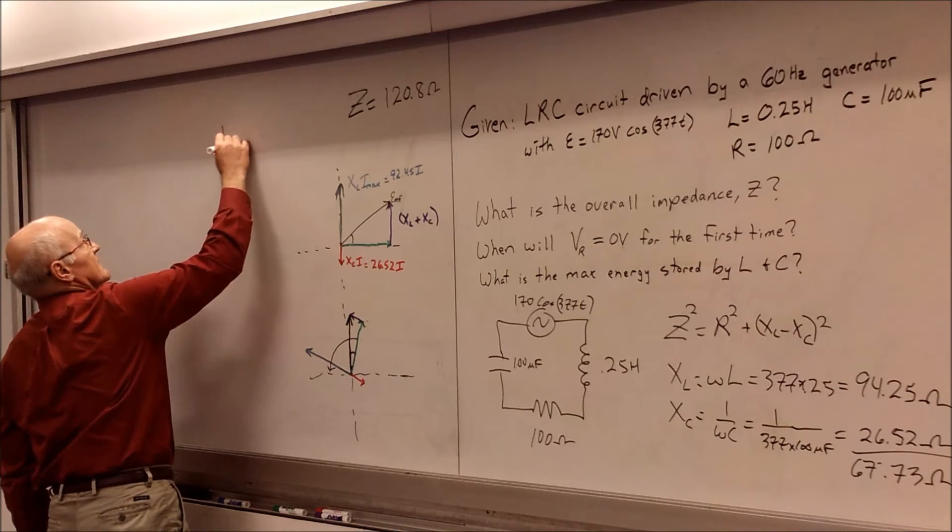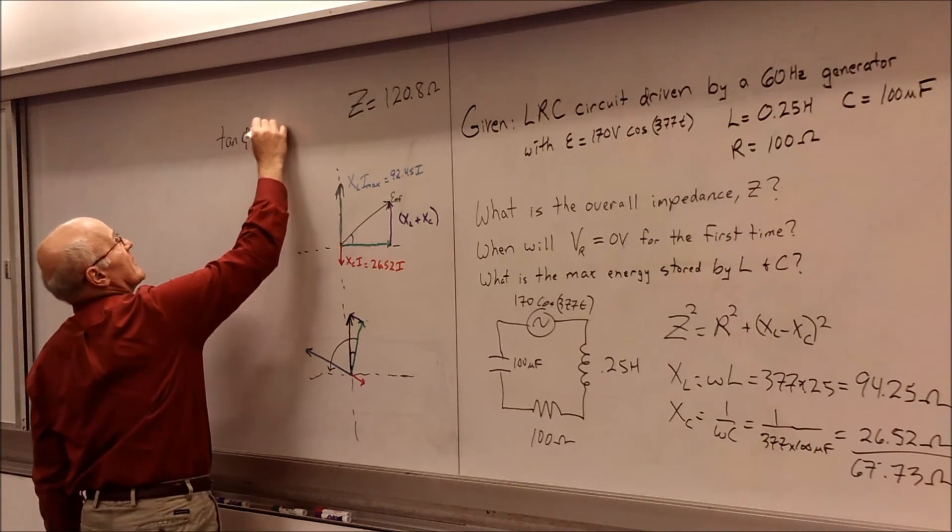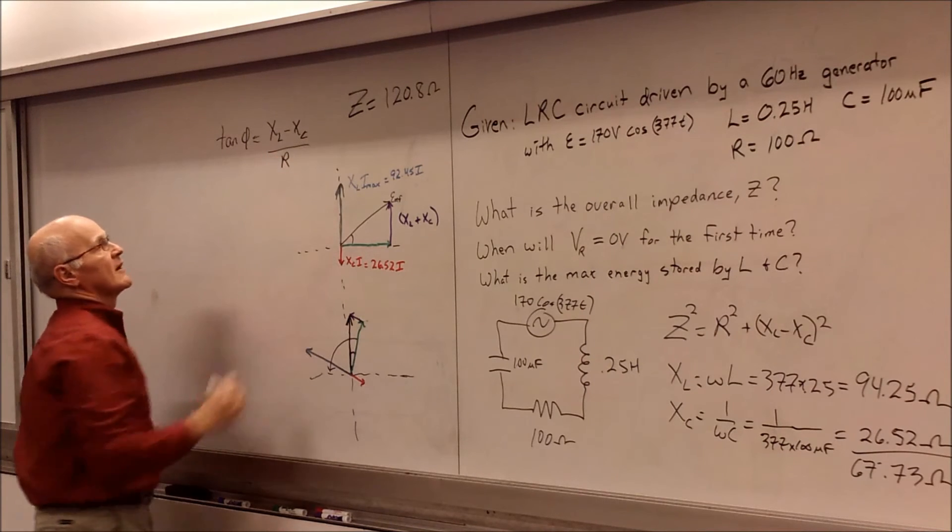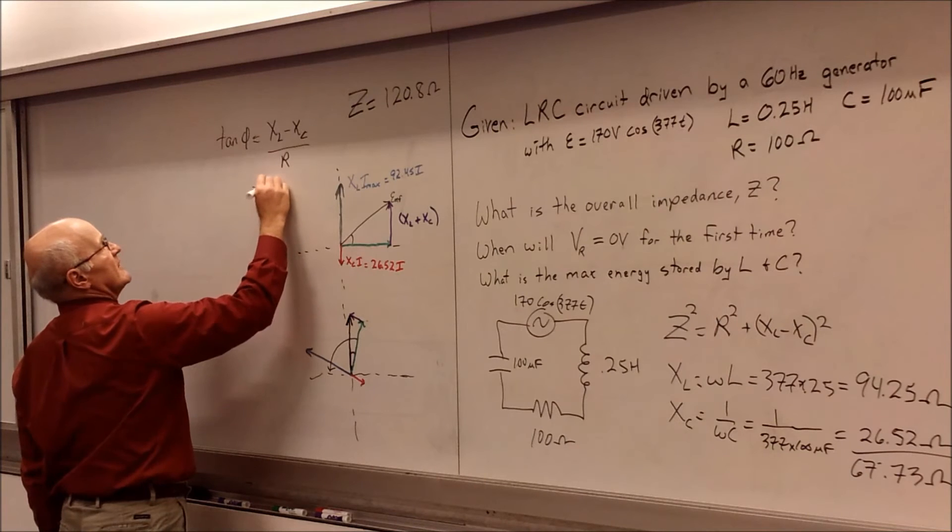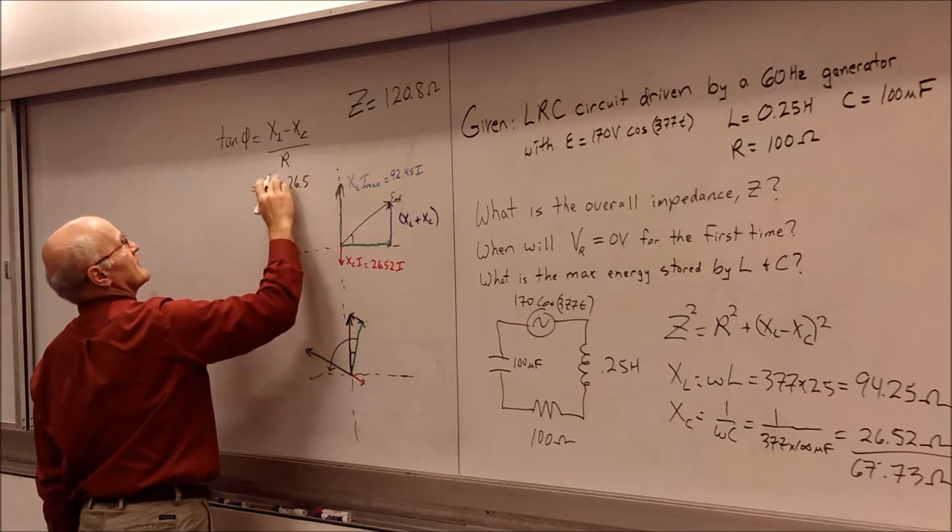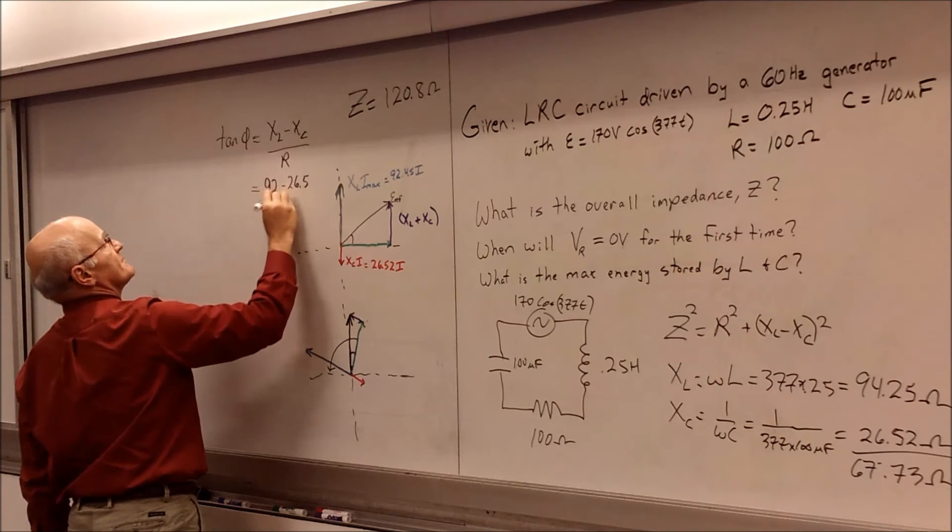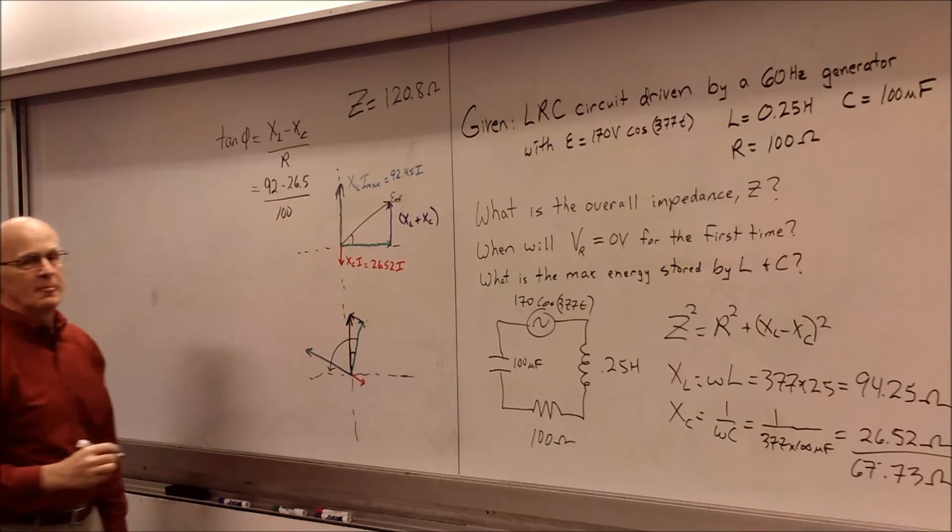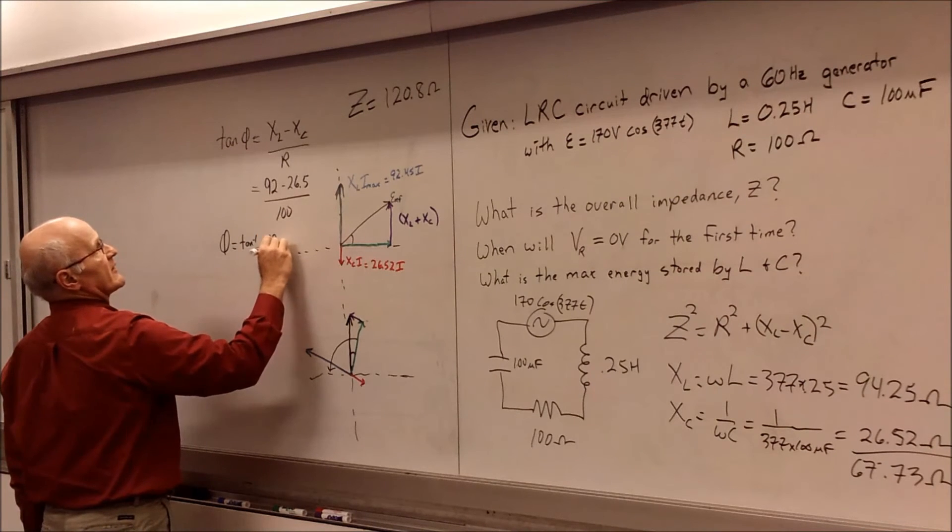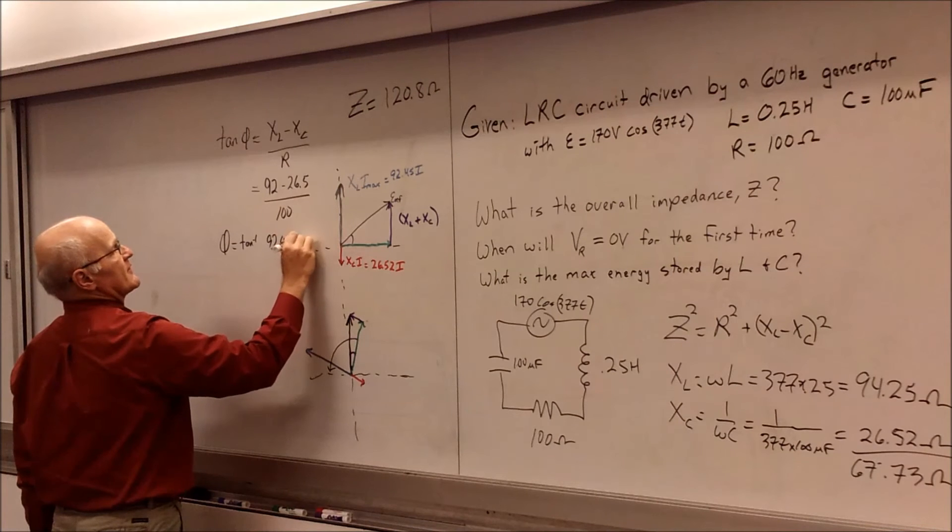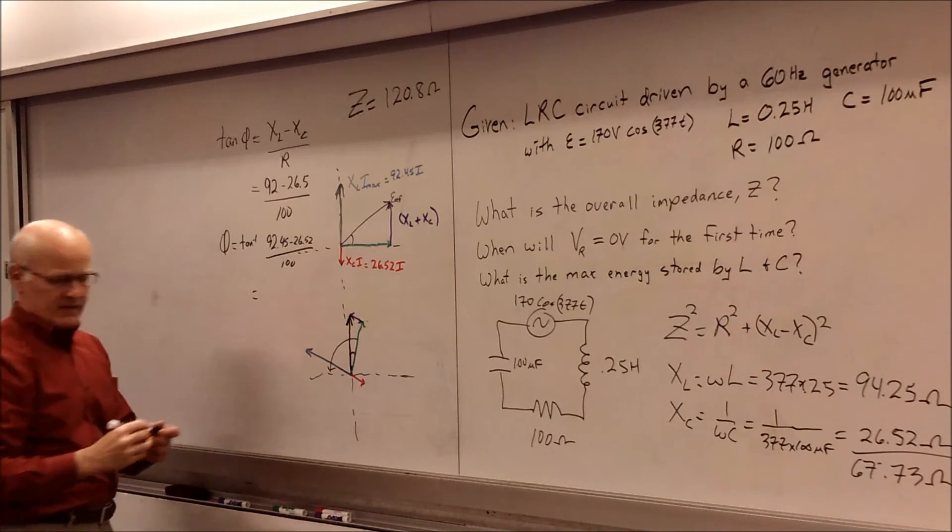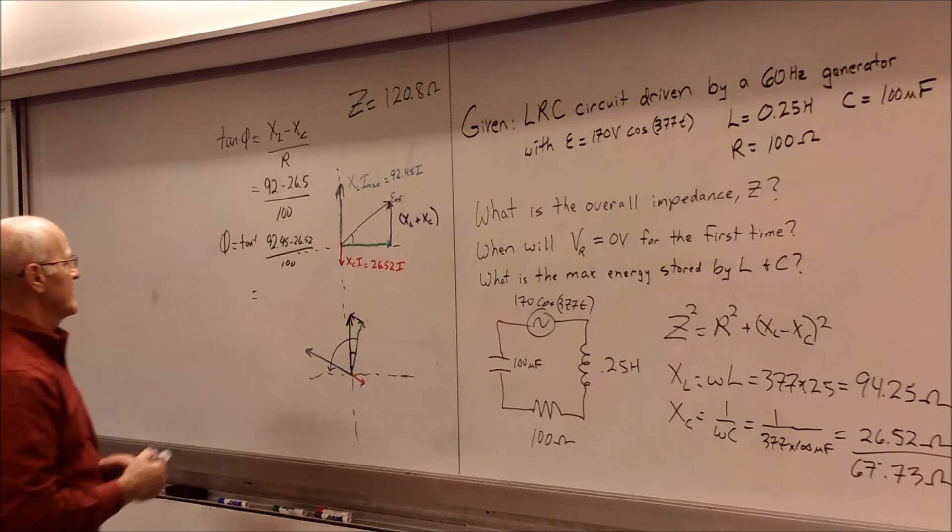And so we know that tangent of phase angle is going to be given by our XL minus XC. And I'll use the negative sign this time for the normal convention. And dividing that by R. So when we go ahead and plug in for this, we get our 95 minus our 26.5. Oops, this is going to be 92. And we're going to divide that by 100. All right, so then we solve for the phase angle. Just say that's tan to the negative 1 of 94.25 minus 26.52, divide that by 100. So when we solve for that, we end up getting an angle. And I'll have to check my notes again. And so that phase angle ends up being 34.1 degrees.